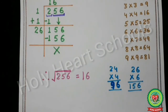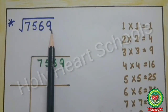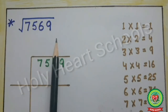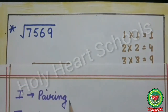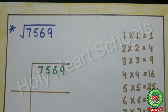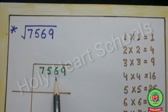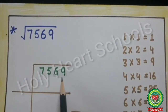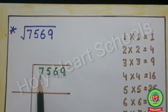After that we will continue with long division for 4-digit numbers. Our next example is square root of 7569. We will solve it step by step. The first step is pairing from the back: 69 is the first pair, 75 is the second pair.